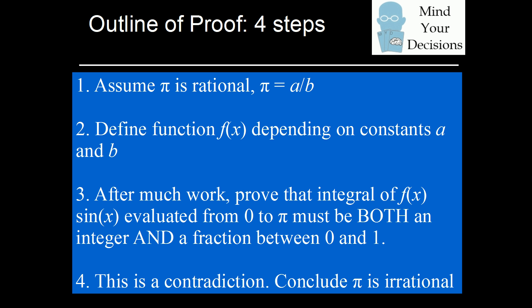The proof that pi is irrational will involve four steps. The first step is to assume it is rational — that it can be represented as a fraction a over b for integers a and b. The next step is to define a function f of x that depends on those constants a and b. The third step, which will be the most important, is to prove that the integral of f of x times sine x, evaluated from zero to pi, will end up both being an integer and being a fraction between zero and one. This will be the contradiction that allows us to prove that pi is irrational.